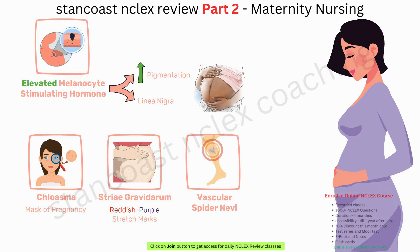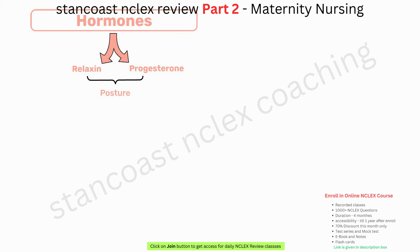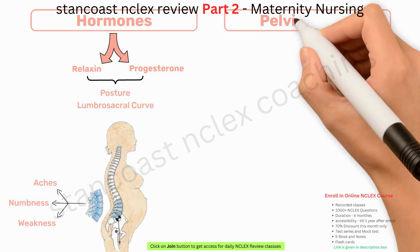Musculoskeletal changes are evident as well. Hormones like relaxin and progesterone affect posture and the lumbosacral curve, potentially leading to aches, numbness, and weakness. Pelvic joints become more mobile and the abdominal wall stretches, causing a loss of tone.